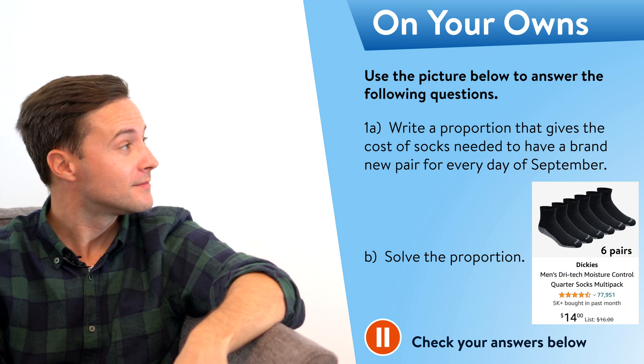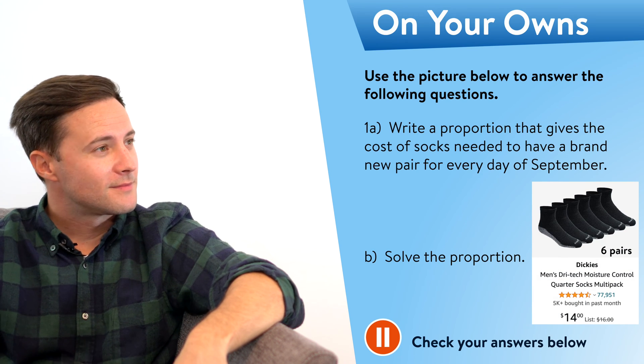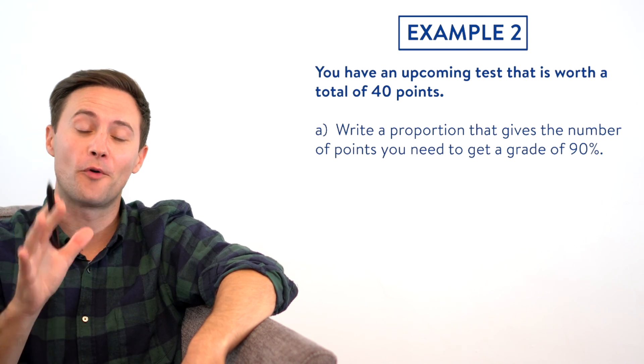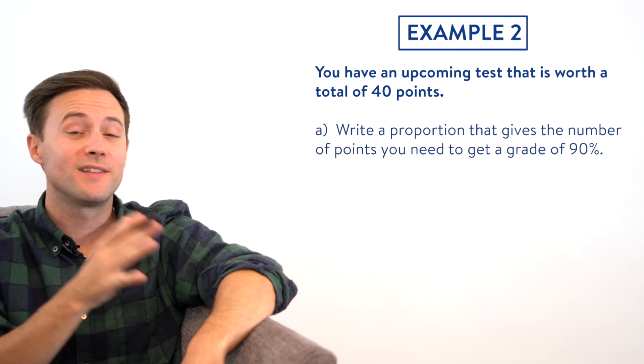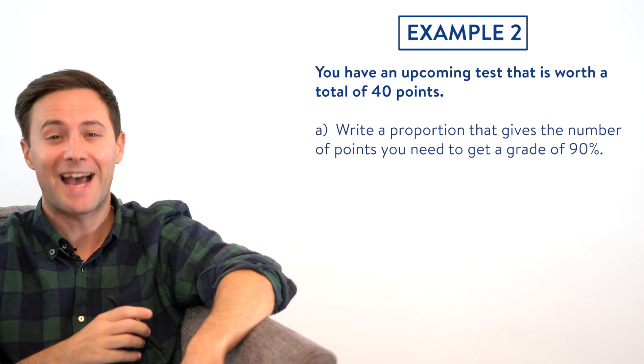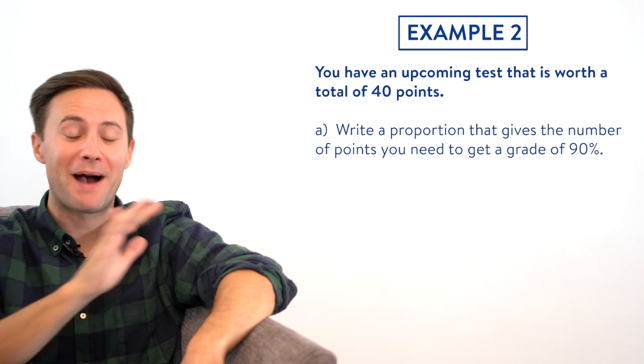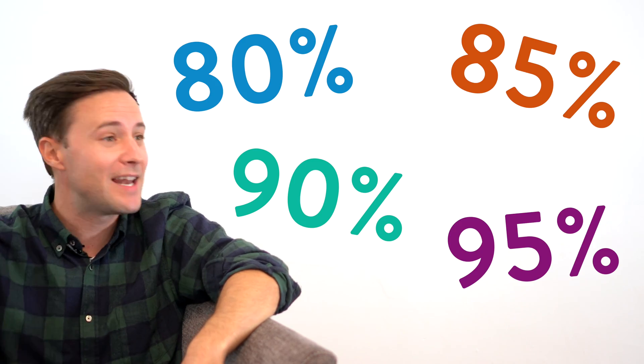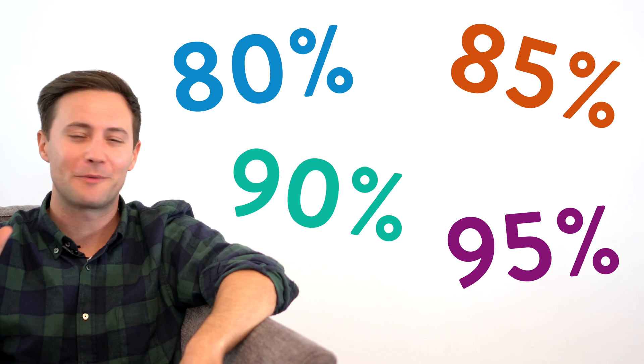Here's something to try on your own. Example two, you've got an upcoming test that is worth a total of 40 points. Write a proportion that gives the number of points needed to get a 90%. The amount of times that I've had students ask, Mr. Jacobson, what do I need to get an 80%, 85%, 90%, 95%? Always right before tests, students always want to know what they need to score in order to get whatever percent. I'm going to teach you how to figure it out yourself. So no more asking your teacher.